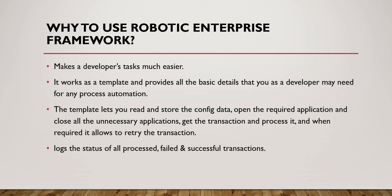In previous videos, we developed a process to automate websites like an employee ID generation website or a sales report generation site. In those projects, I did not follow any particular pattern — I just added activities, spied out elements, and accomplished the job. But I missed things like error handling, or what the robot should do when there is no transaction data available. Those are small but very important concepts we need to take care of, otherwise the robot will fail in some cases.